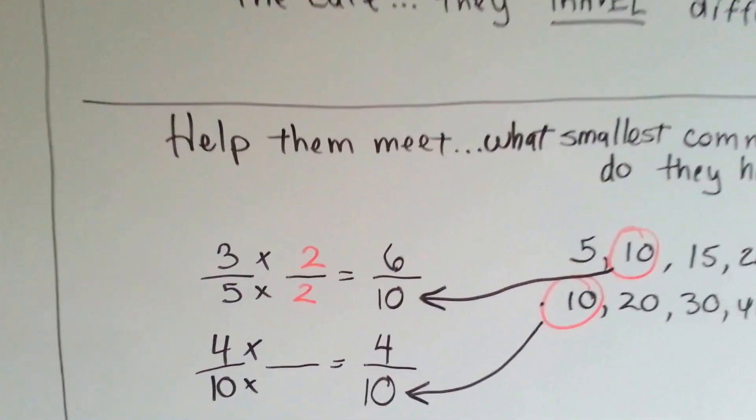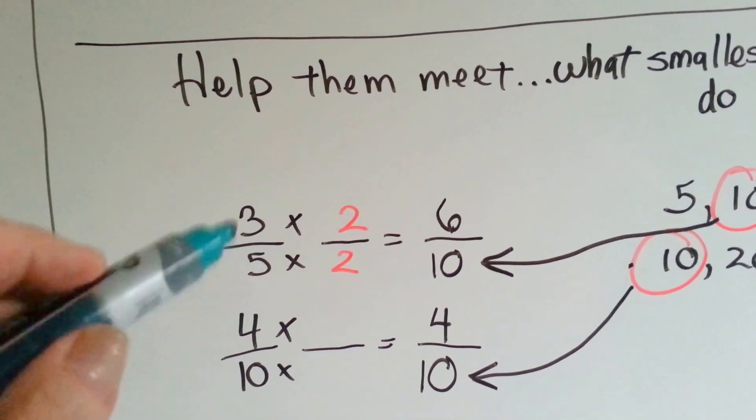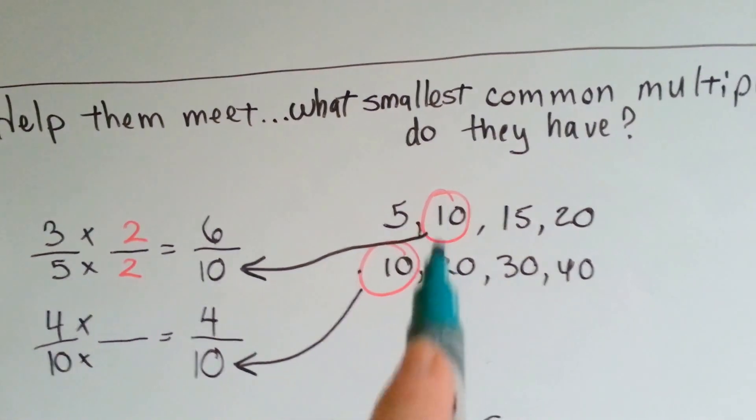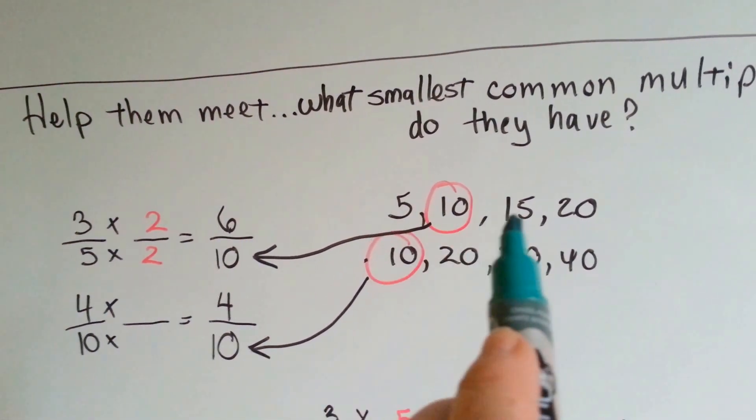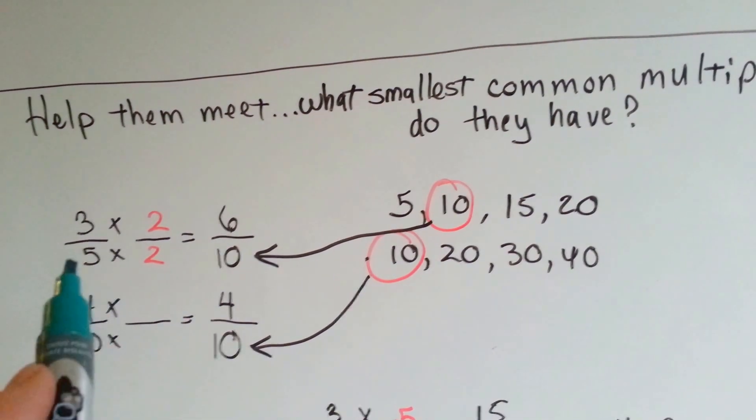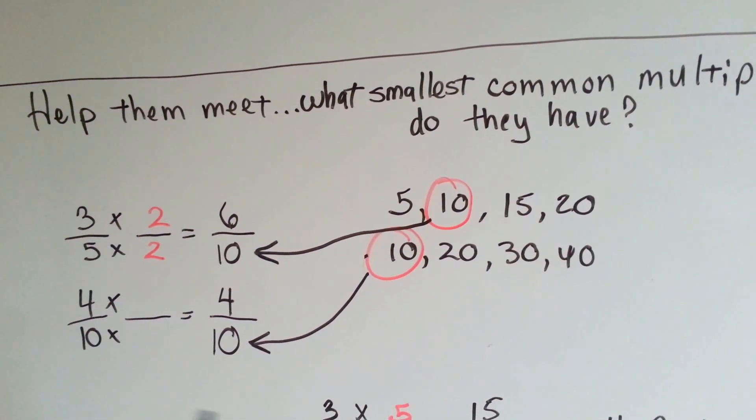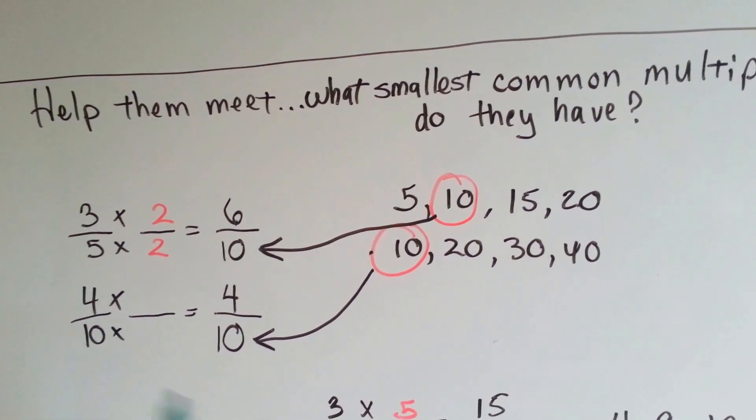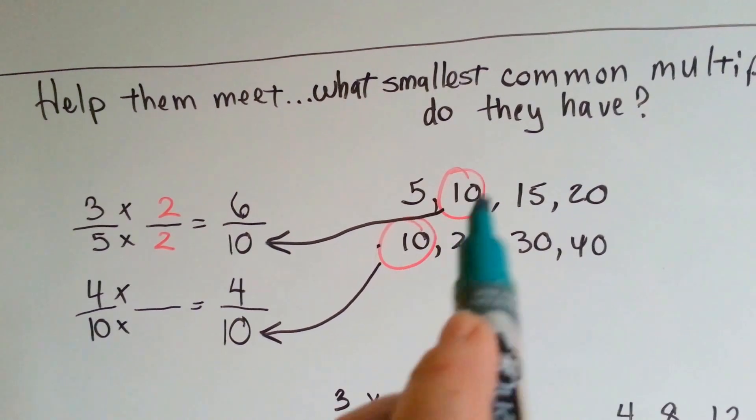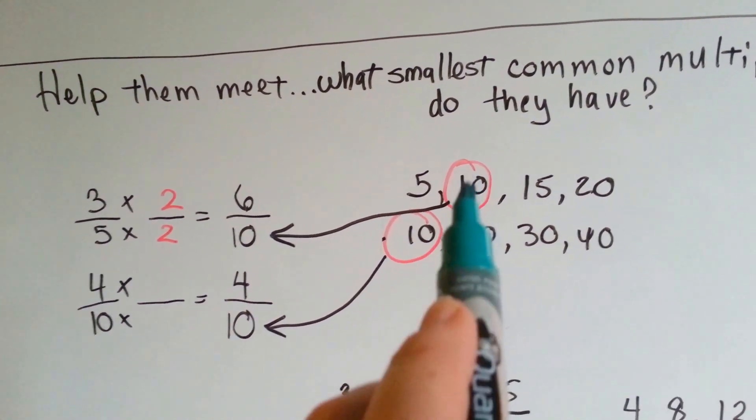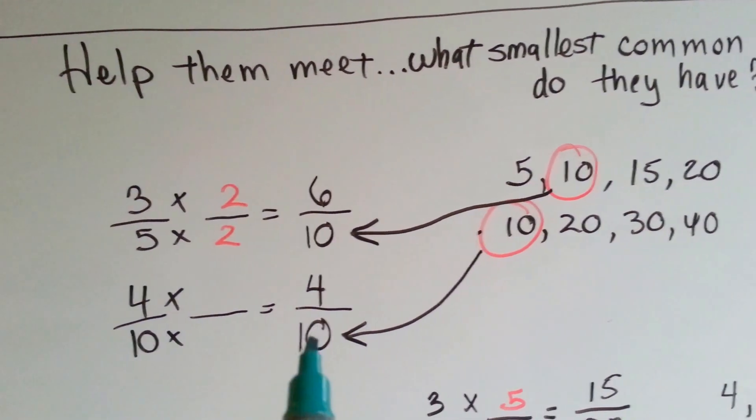If we wanted to help 3 fifths and 4 tenths meet, where could they meet? What's the smallest common multiple they have? We write the answers for the 5 times table, because it's got a 5 for a denominator. We write the answers for the 10 times table, because it's got a 10 denominator, and these are their multiples. And we find out the smallest one that they have in common is 10. That's going to be where we're trying to meet at.